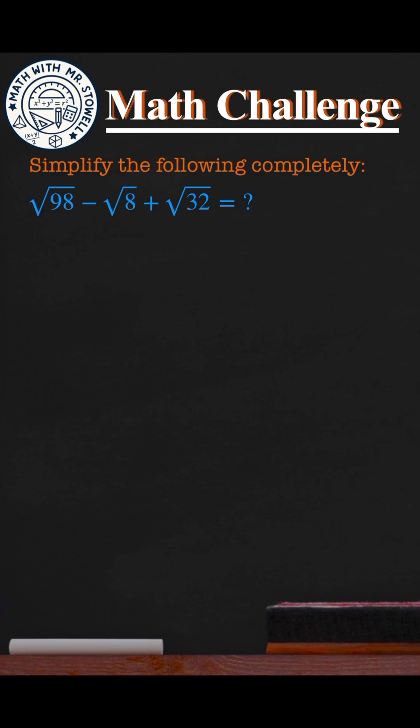The easiest way to simplify this completely is to take it apart. So we are going to look at the square root of 98, we're going to look at the square root of 8, and we're going to look at the square root of 32.